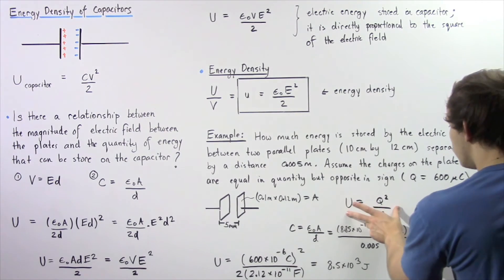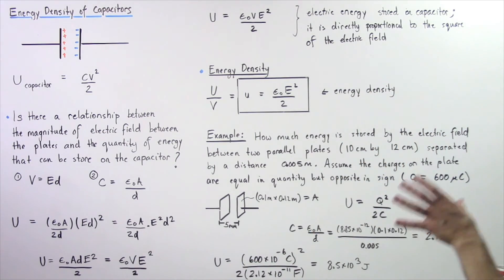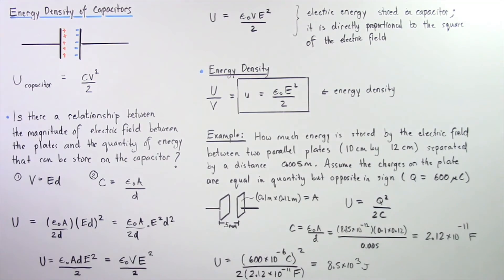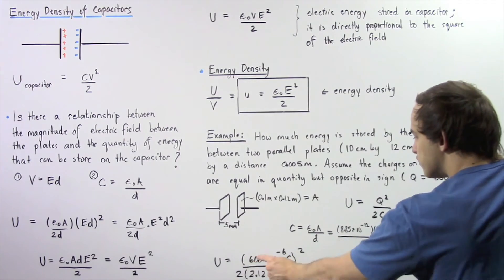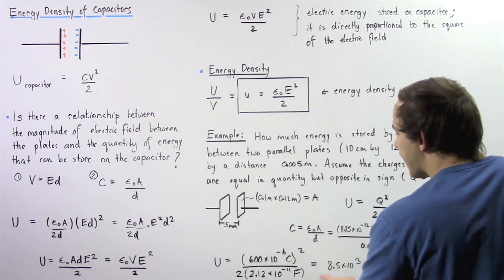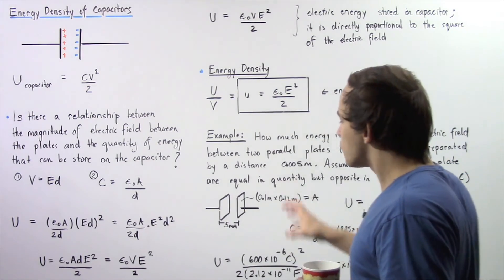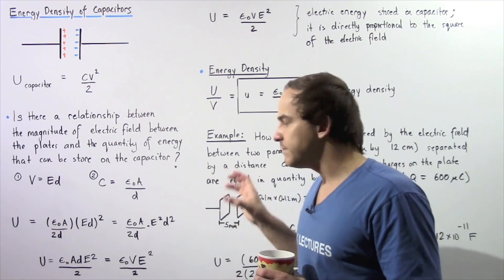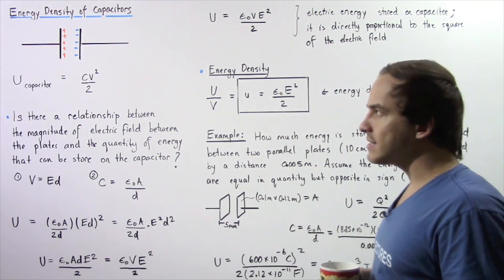Finally, we use the energy equation. The electric energy stored within our electric field is equal to Q squared — that is 600 times 10 to the negative 6 coulombs, squared — divided by 2 multiplied by our capacitance. This gives us approximately 8.5 times 10 to the 3 joules of energy stored within the electric field between our two parallel plates.